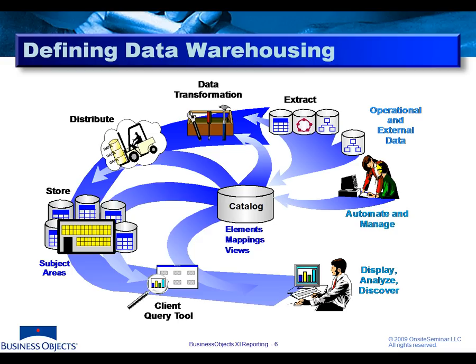So we've gone through an extraction process, a transformation process, and a distribution process. Now the warehouse is the primary place we'll go to gather and extract information.